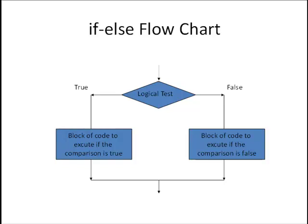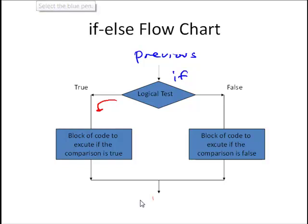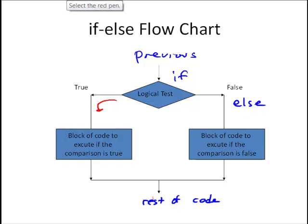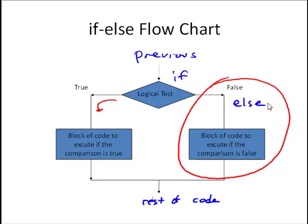Let's look at how this looks on a flowchart. We can see we're coming in with our previous commands. We come into the logical test — here's the if statement. If it's true, we go this way and execute one set of commands, then come back down to the rest of the code. If it's false, we go this way and execute a different set of commands off the else statement. Having an action to do if it's false is optional.